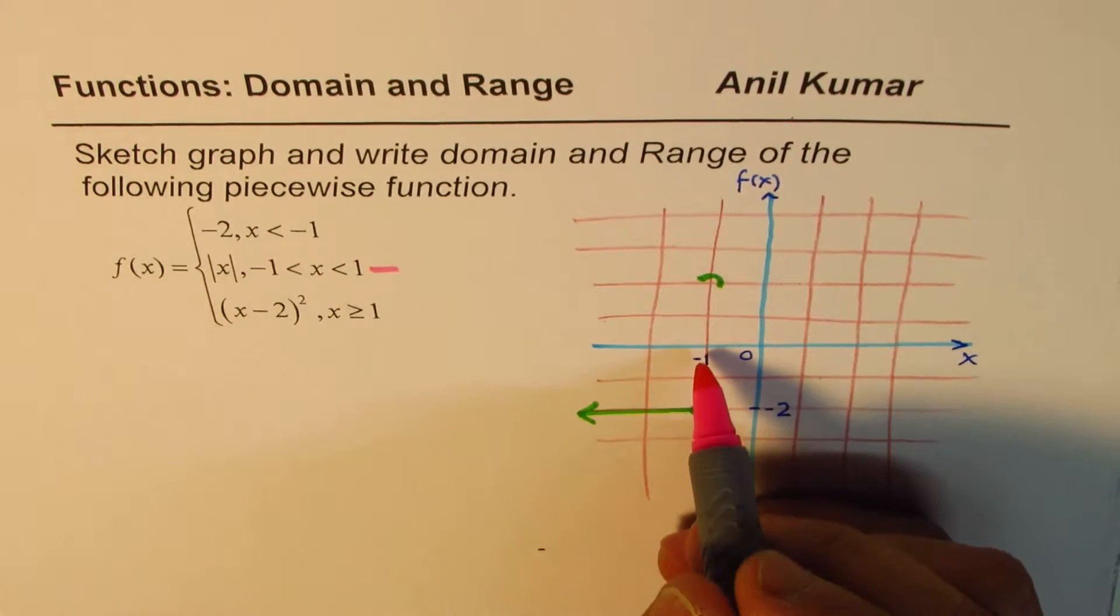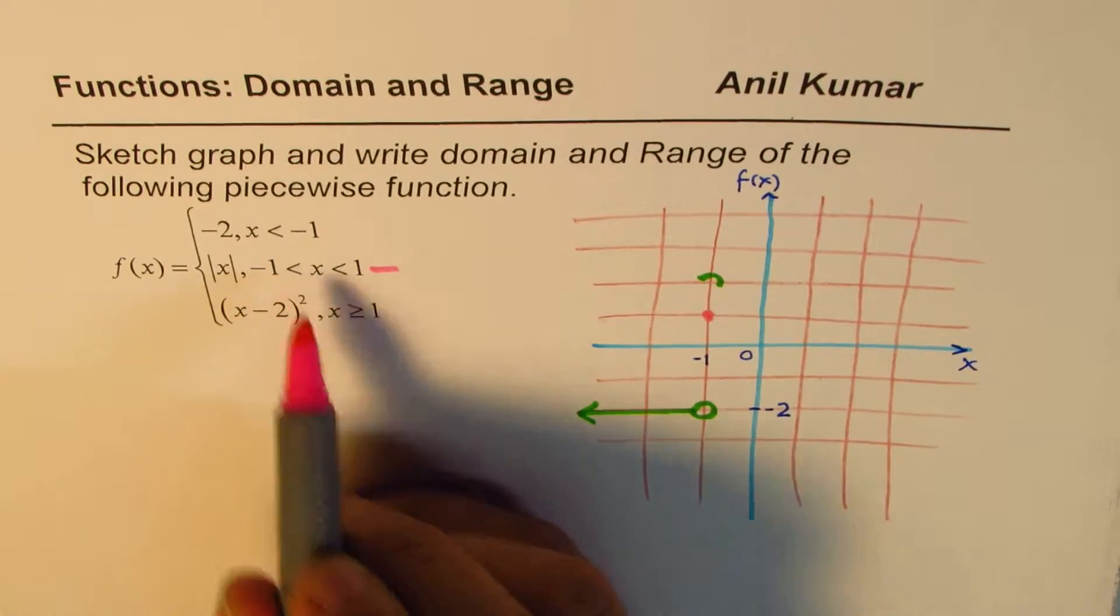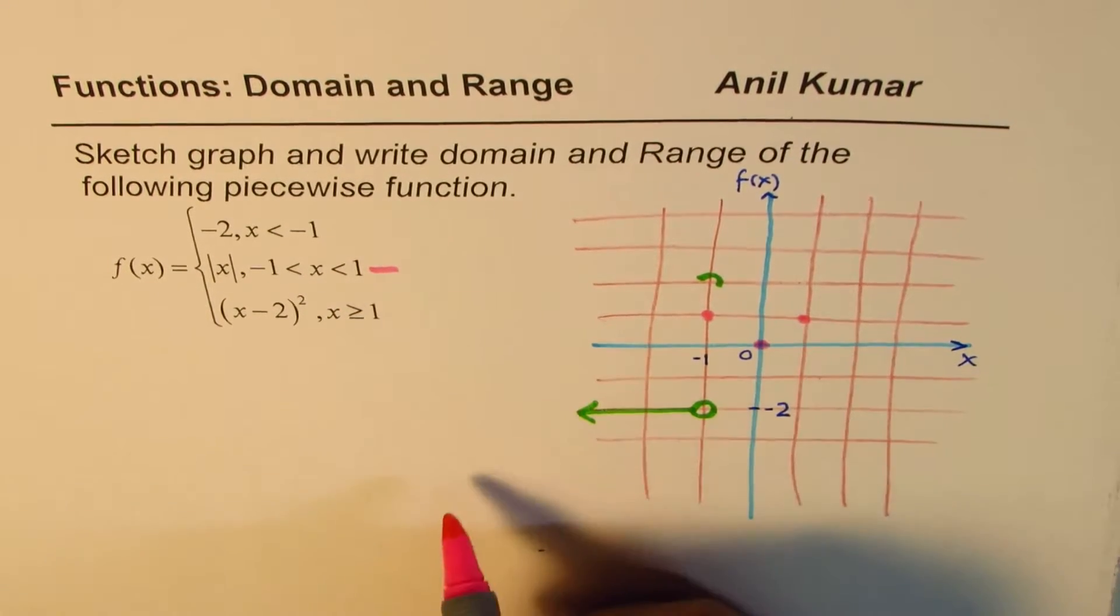So if I write minus 1 here, I get positive 1, that's the value. If I write 0, I get this point, and if I write 1, I again get positive 1.